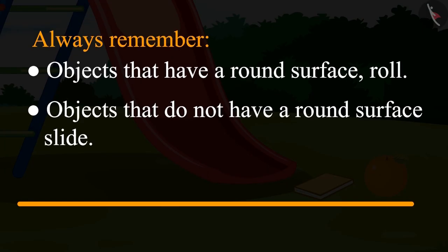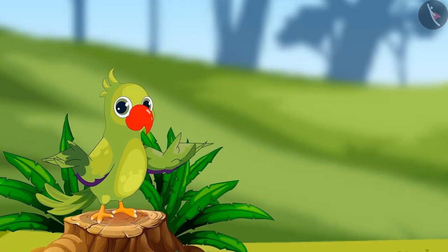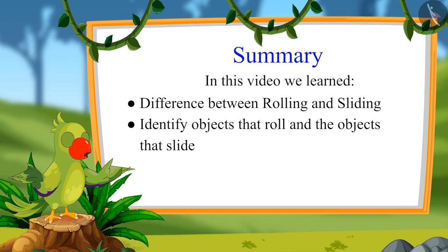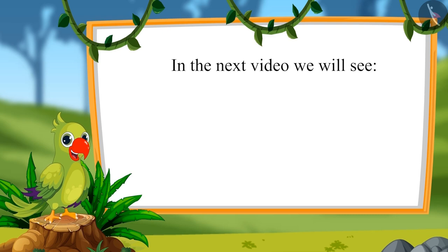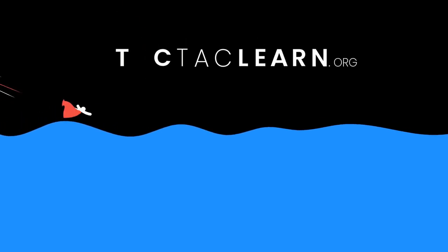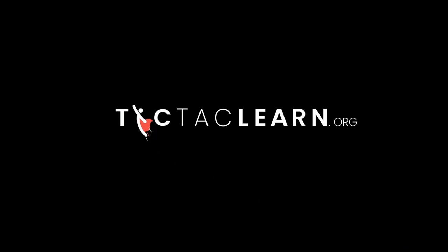So children, objects whose surface is round, they roll. And objects whose surface is not round, they slide down. That was all for today. In this video we learned the difference between rolling and sliding, and identified objects that roll and objects that slide. In the next video we will see some interesting examples of objects that roll and slide. Bye bye children, see you!